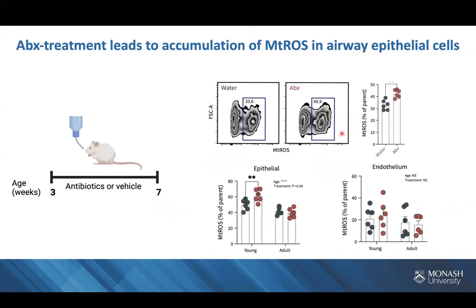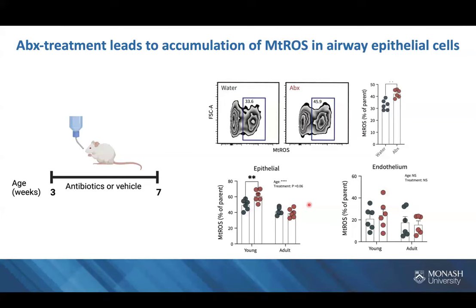We did flow cytometry looking at mitochondrial ROS production by epithelial cells. Straight after antibiotic treatment — before co-housing — there was an increase in mitochondrial ROS, really specific to epithelial cells. We didn't see the phenomenon in endothelial cells, so it's not a broad phenomenon related to any structural cell. Importantly, we did the same experiment in adult mice given antibiotics as adults, and we don't see this mitochondrial ROS production. This is something very specific to early life — early life antibiotics leads to mitochondrial ROS production in epithelial cells, but not in adult mice, which aligns with epidemiological data where antibiotics in adulthood doesn't seem to have an effect.